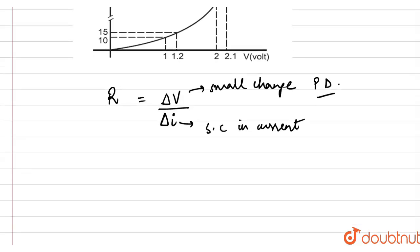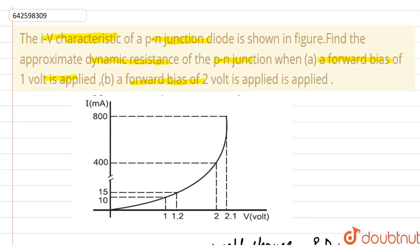So, the dynamic resistance R here is for the first part where the forward bias of 1 volt is applied. Now, here we have taken two instances, at 1 volt and 1.2 volt. At 1 volt, the current is 10 milliampere. At 1.2 volt, the current is 15 milliampere.